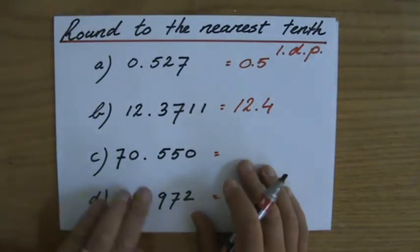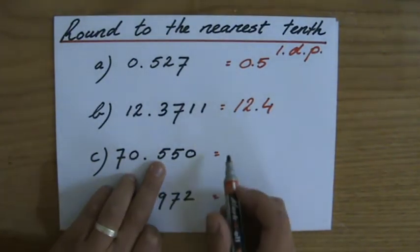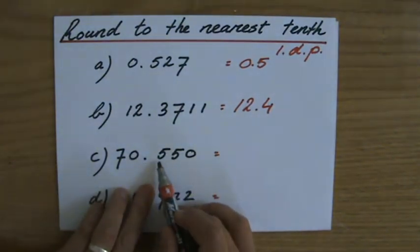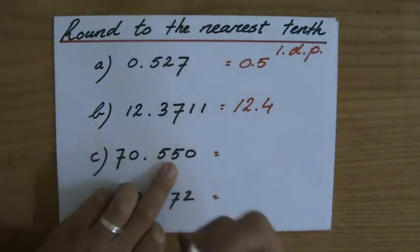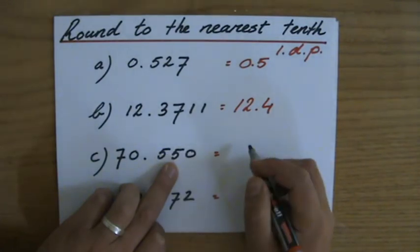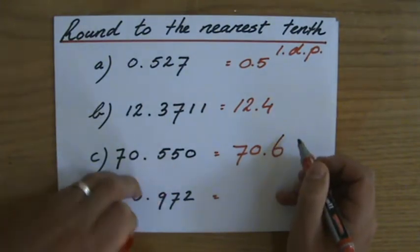The next question, to the nearest decimal, one decimal place, the nearest tenth. So it's a five, and it either stays a five or it goes up to a six. That depends on the next one. It's a five, so then we've said, well then it will go up. A five or higher, it will go up. 70.6, therefore.